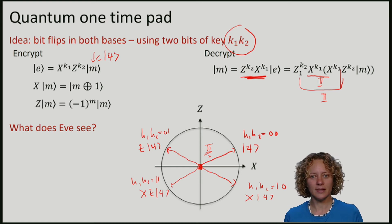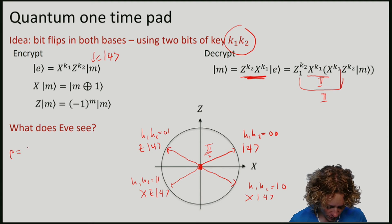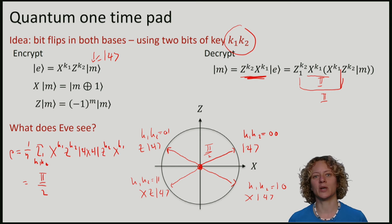We see that the density matrix rho that Eve sees, so Eve sees the state averaged over the bits K1, K2, is just the maximally mixed state, independent of psi.